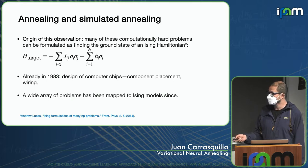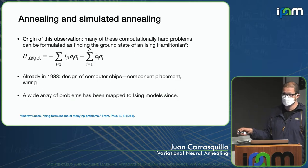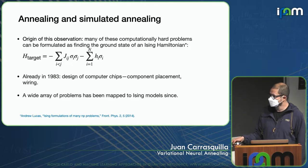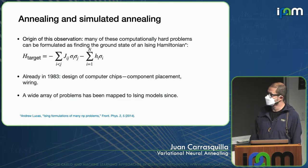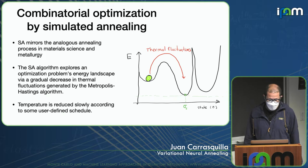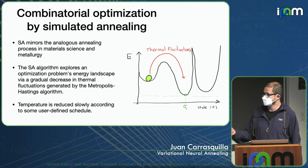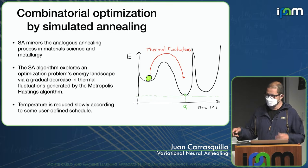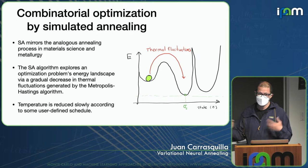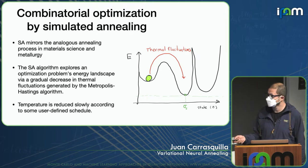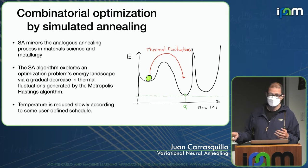A wider array of problems have been mapped to finding ground states of these Hamiltonians, as shown in the beautiful paper by Andrew Lucas, 'Ising Formulation of Many NP Problems.' Simulated annealing mirrors the process in metallurgy and material science — you explore the optimization landscape via a gradual decrease in thermal fluctuations generated by a Monte Carlo algorithm, slowly reducing the temperature until you hopefully find the ground state of the target Hamiltonian.